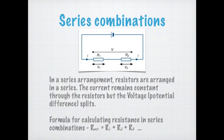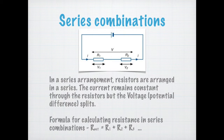In this type of circuit, the resistor with the greater resistance gets a greater voltage, while the resistor with the lower resistance gets the lower voltage. That's basically how a series combination works.